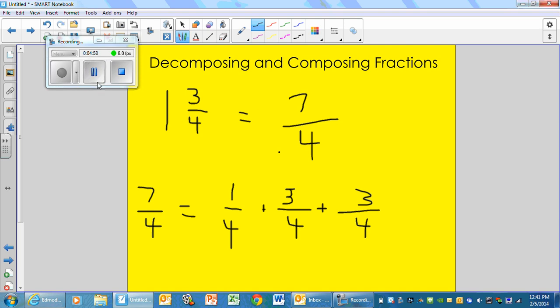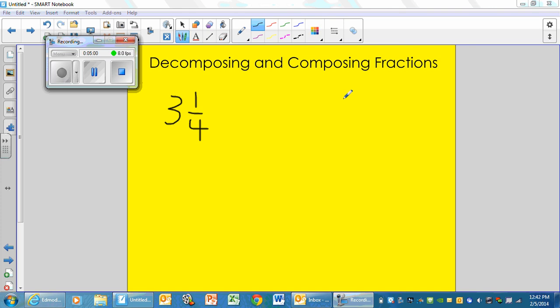Now I'd like for you to try one. I would like to see if you can try to decompose 3 and 1 fourth. I went through a couple of steps on the last one to get to an improper fraction. And then from there I figured out what numbers I could add up to equal the numerator of that improper fraction. If you need to rewind and re-watch what I did on the last one, feel free to do so.